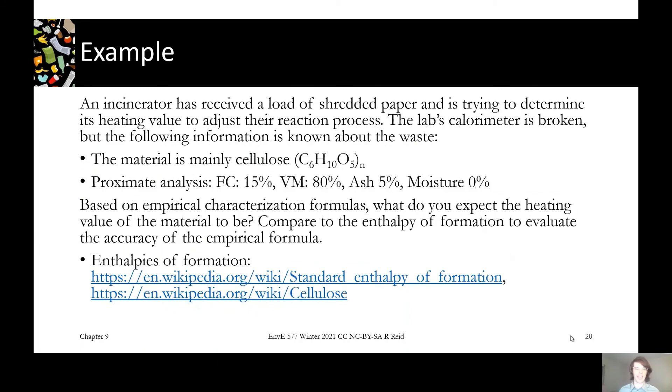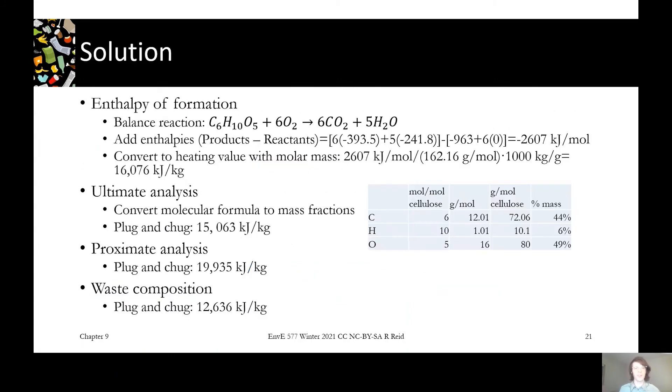If you start with first principles and look at the enthalpy of formation, we know the enthalpy of the reaction is the enthalpy of the products minus the reactants. The reaction is C6H10O5 + 6O2 → 6CO2 + 5H2O. We've got six CO2 multiplied by the enthalpy for CO2, five waters with the water enthalpy, and then subtracting our reagents, we've got our one cellulose and six oxygens. We get minus 2,607 kilojoules per mole. We use the molar mass to change it from a molar basis to a mass basis and we get about 16,000 kilojoules per kilogram. So that's the hard way to do it.